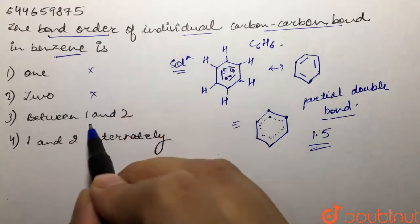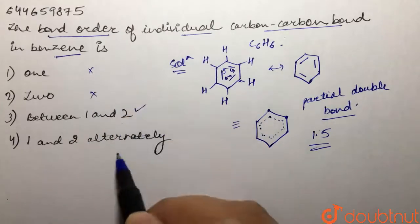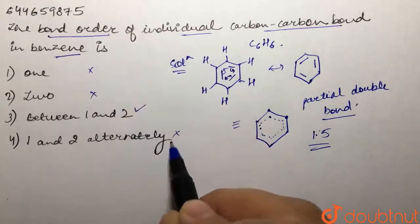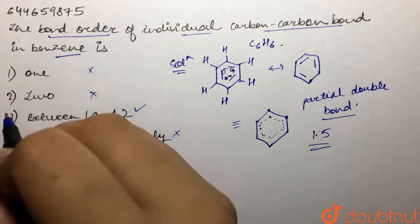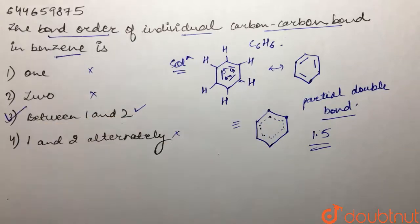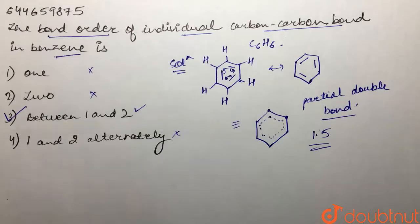So we can say that the bond order is between 1 and 2. Looking at our options: option 1 is not correct, option 2 is not correct, 'between 1 and 2' is correct, and '1 and 2 alternately' is also not correct. The bond order of carbon-carbon in benzene is between 1 and 2 due to resonance, giving it a partial double bond character.